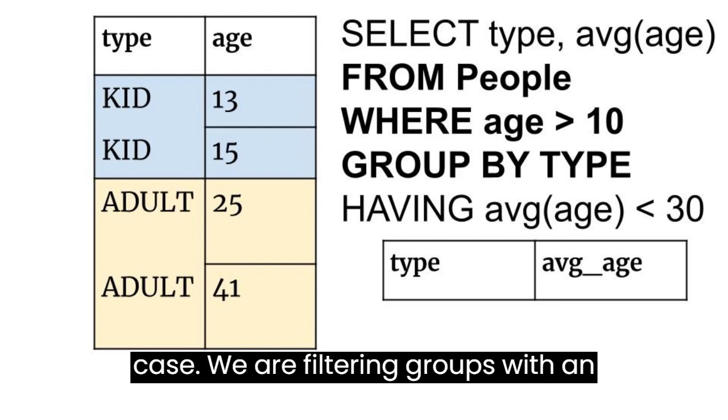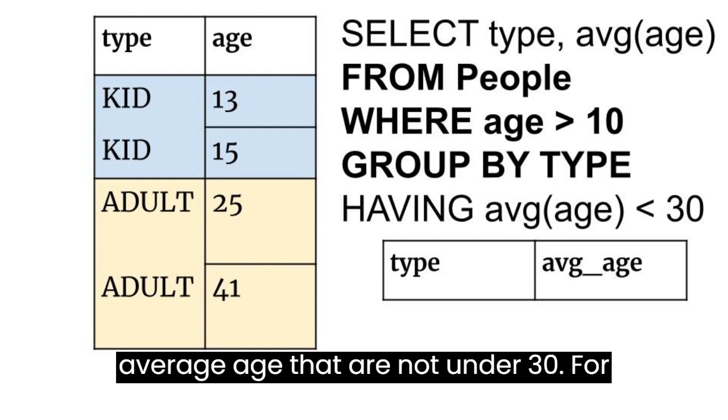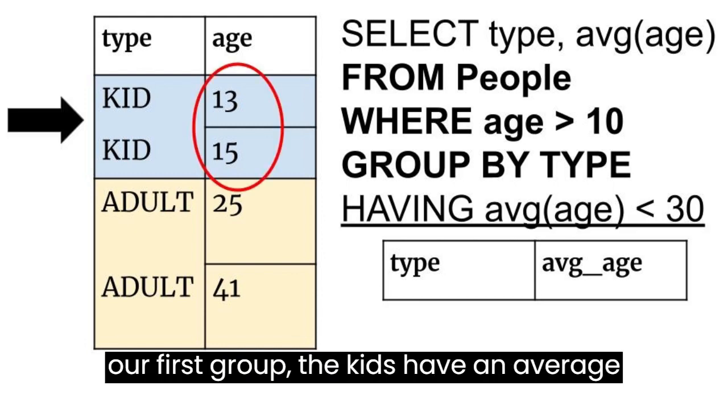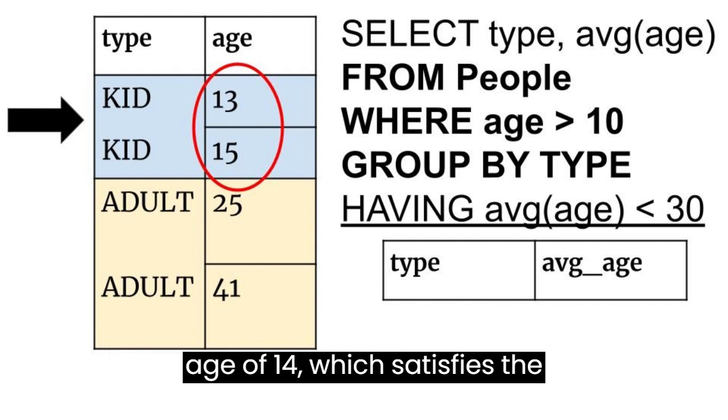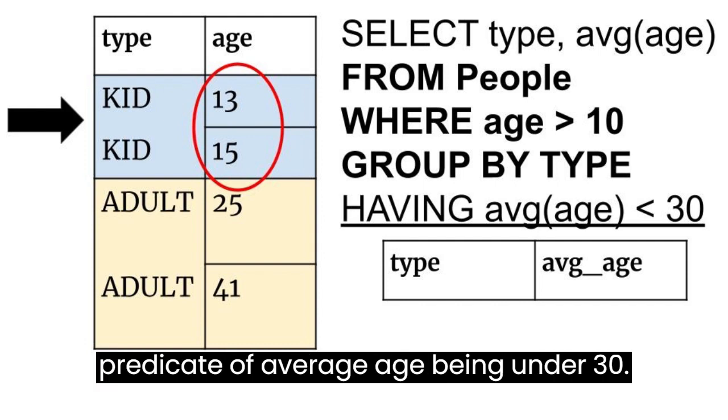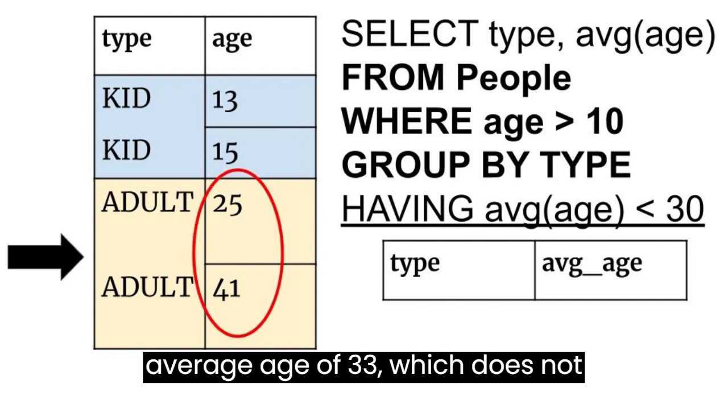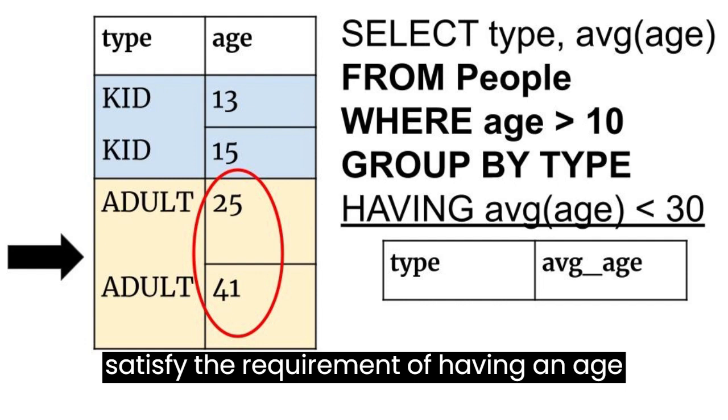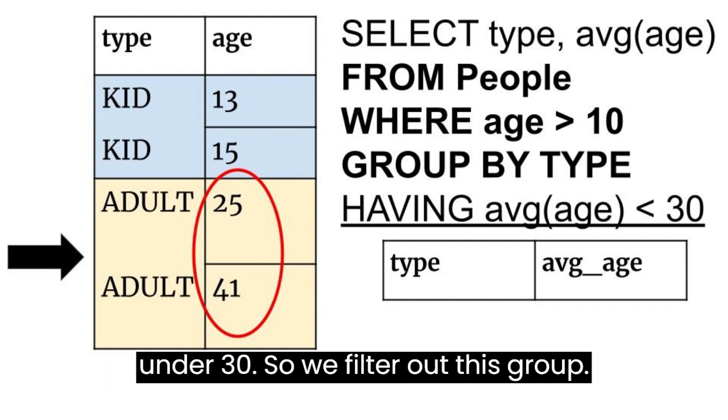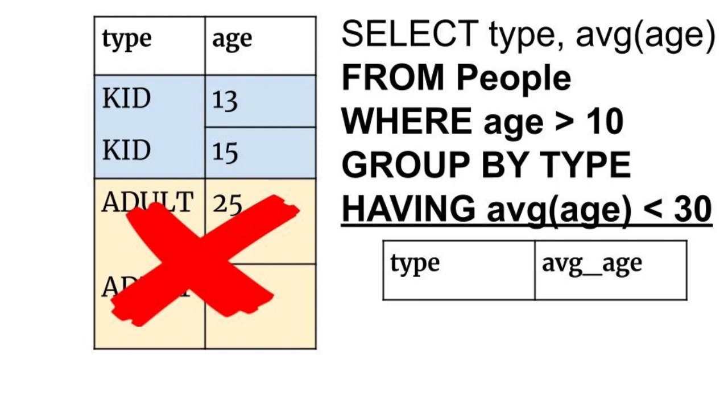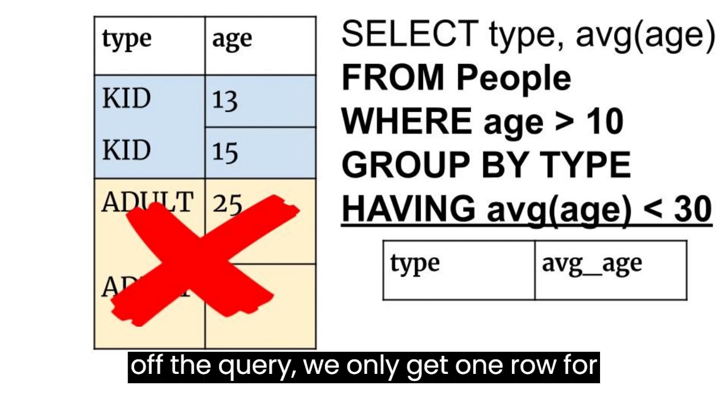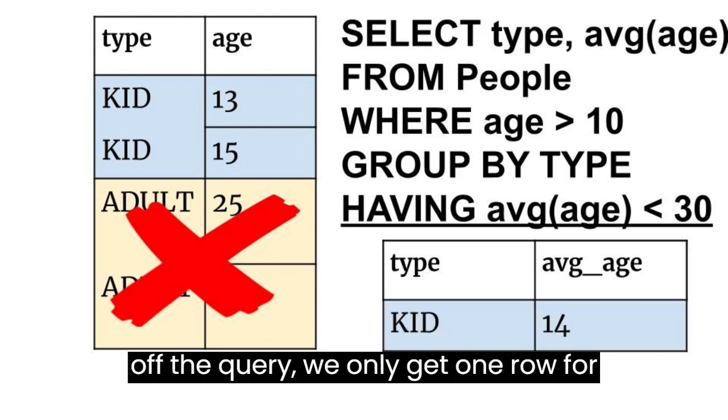In this case, we are filtering groups with an average age that are not under 30. For our first group, the kids have an average age of 14, which satisfies the predicate of average age being under 30. For the second group, the adults have an average age of 33, which does not satisfy the requirement of having an age under 30, so we filter out this group. When we run our select clause to finish off the query, we only get one row for the kids group.